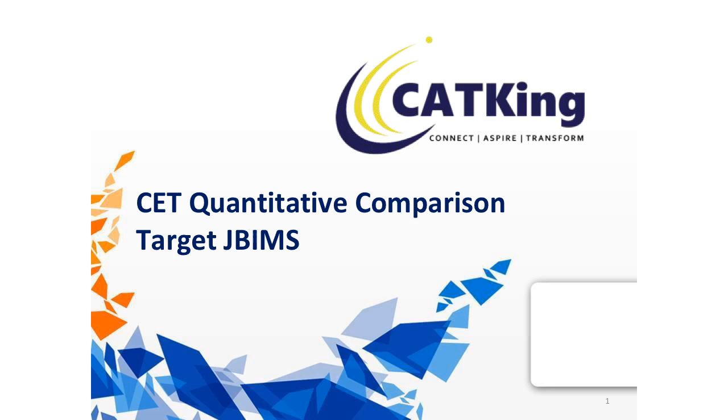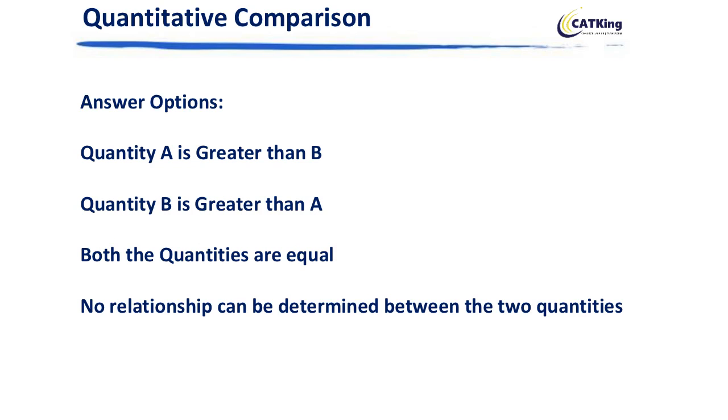Let's understand the CET quantitative comparison based questions today. Basically, quantitative comparison is where you will be given two sets of quantities: quantity A and quantity B. It could be anything. You have to compare which is greater, like quantity A is greater than B, B is greater than A, or both of them are equal, or they cannot be a relation between the two.